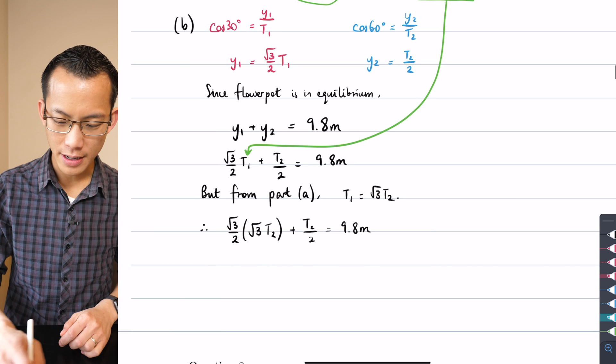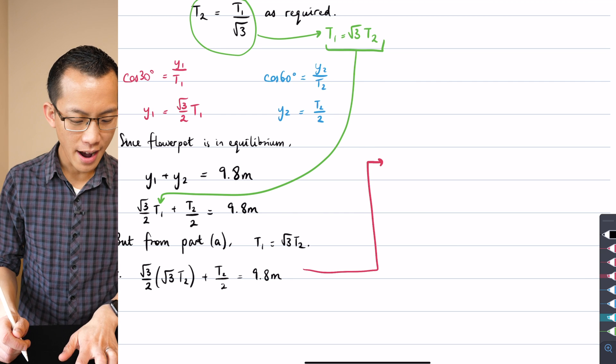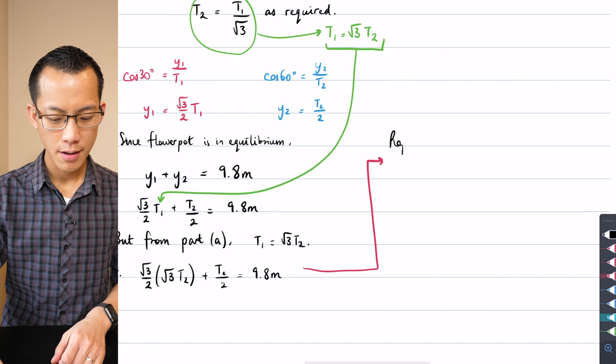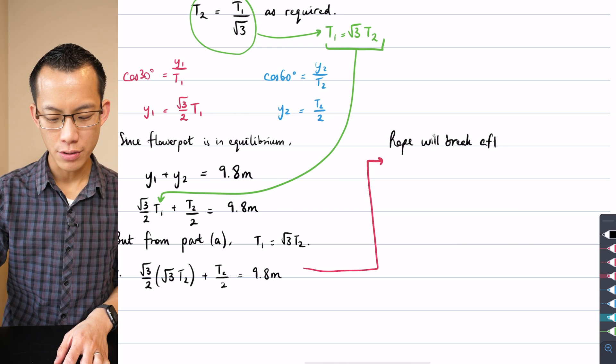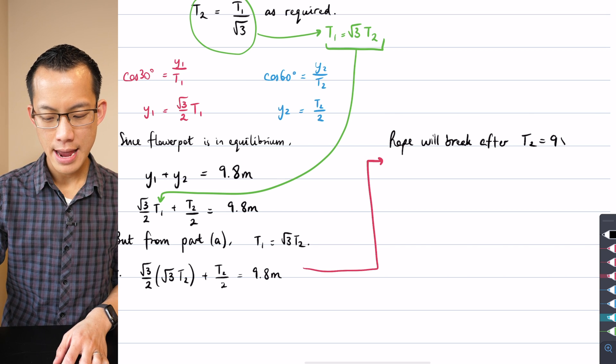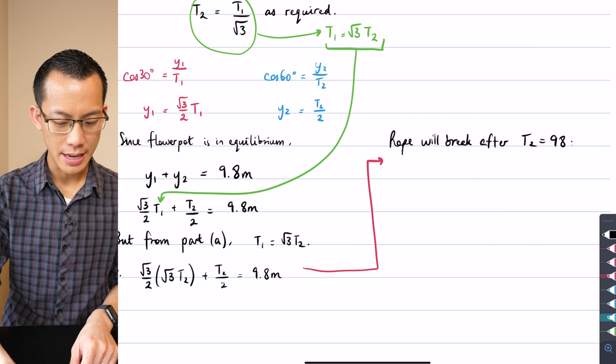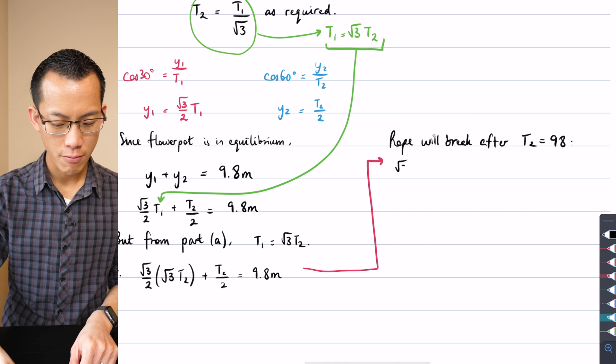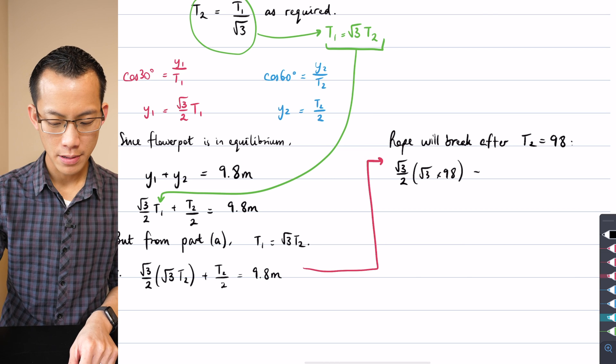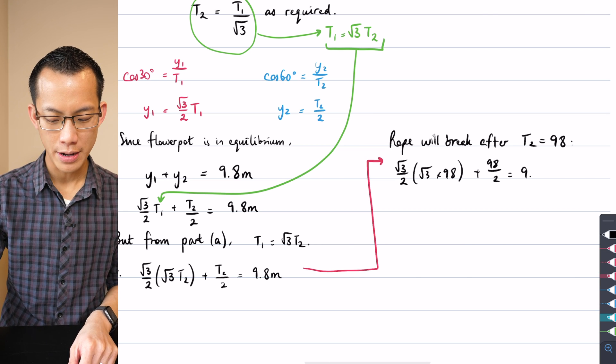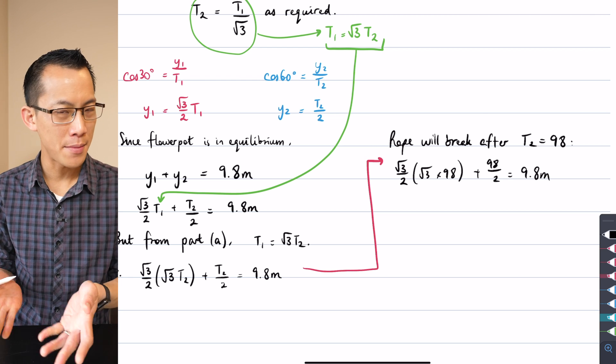So I can say the rope will break after T2 = 98. I'm going to substitute in T2 = 98 because that's just before it breaks. So therefore I can say (√3/2) times √3 times 98 plus 98/2 = 9.8m. So I've satisfactorily gotten rid of every other unknown except for m, and that's what I'm going to solve for.